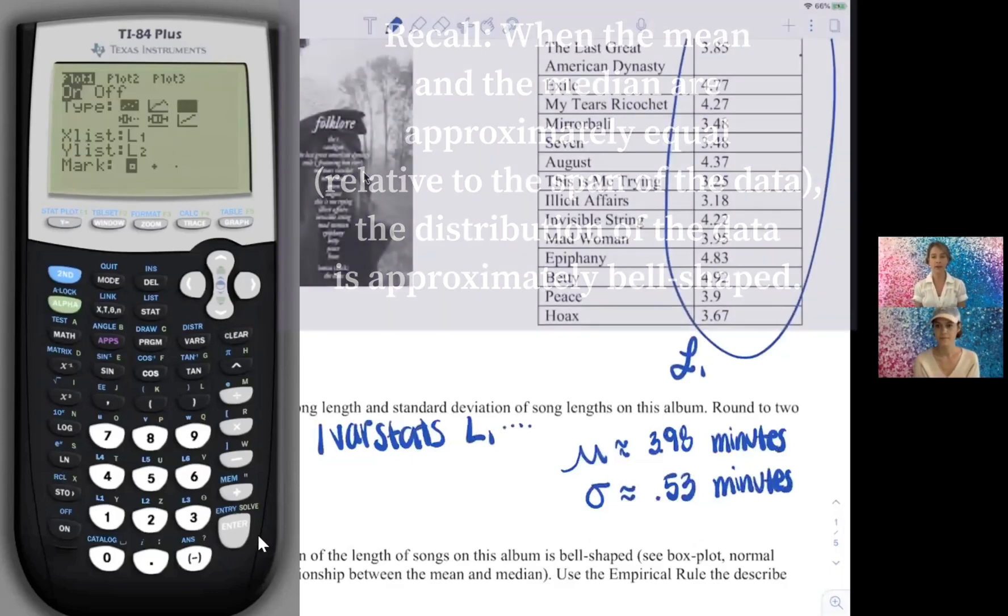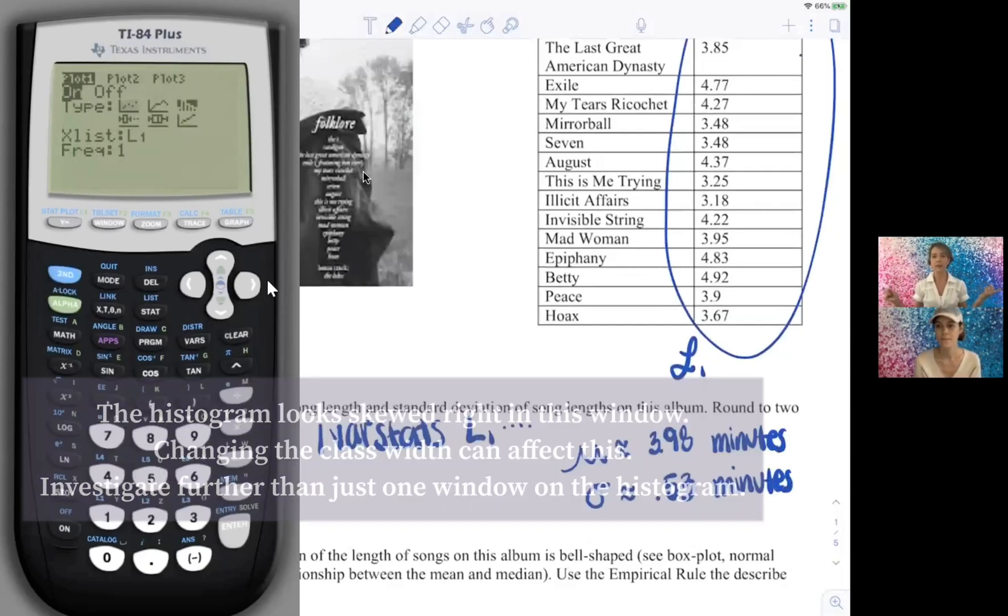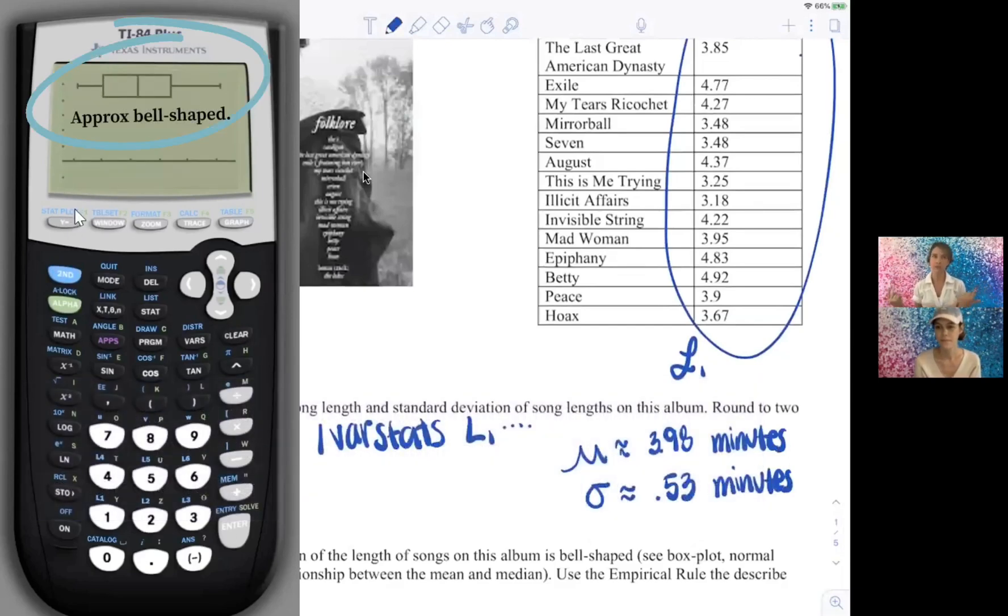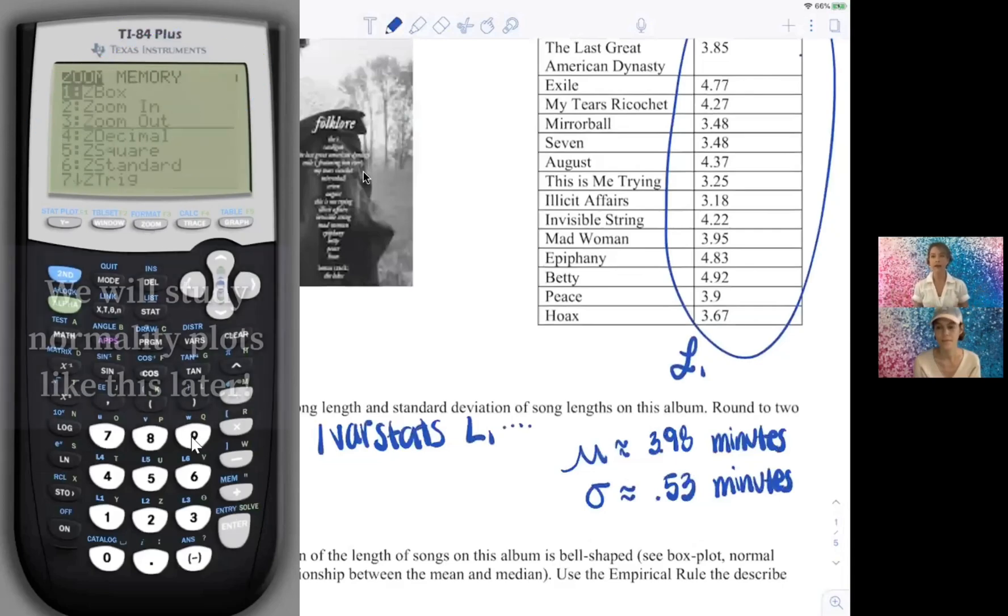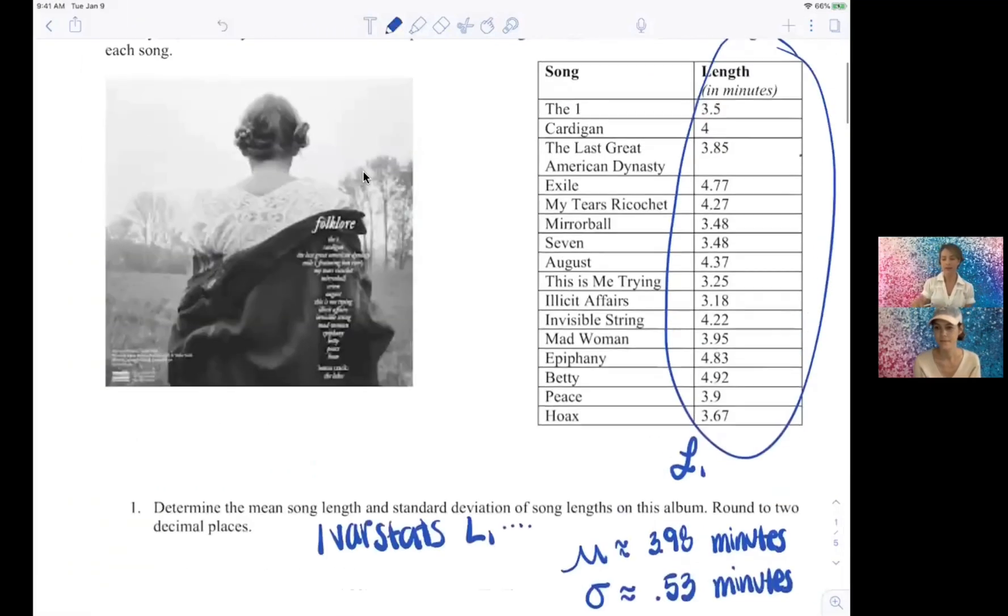Where we can look at box plots, which is next section, and what's called a normal quantile plot and some other little details. And I went ahead and said, you know what, in my analysis, this data is approximately bell-shaped.